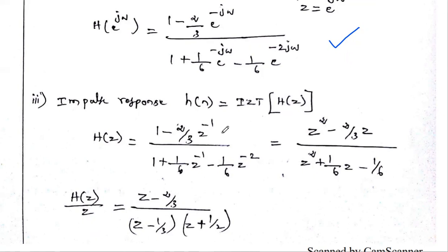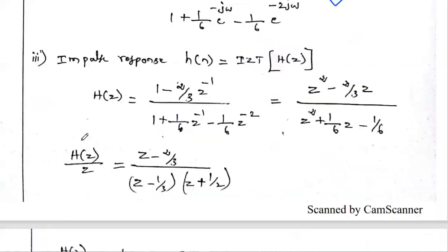In the DTFT, the variable is e^jω, which is somewhat complex. But in the Z-transform method, the variable is simply z, so we can easily obtain the inverse. The impulse response h(n) is nothing but the inverse Z-transform of H(z). You can see that H(z) has negative z powers.